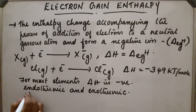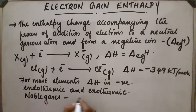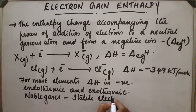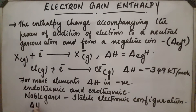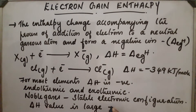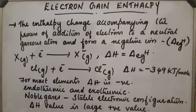In the case of noble gases, they have a stable electronic configuration, so the addition of an electron is difficult — it requires energy. Therefore delta H value is a large positive value, because the electron would go to the next higher unstable configuration. For noble gases, delta H value is a large positive value.